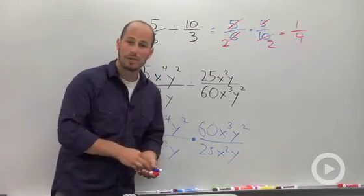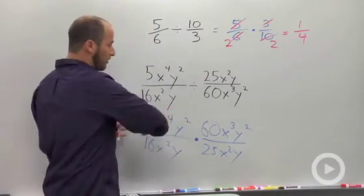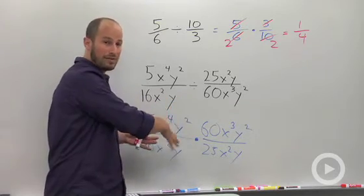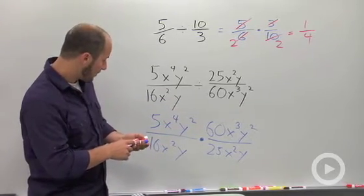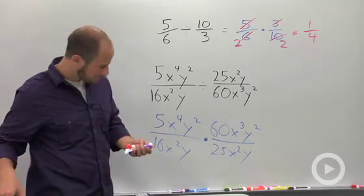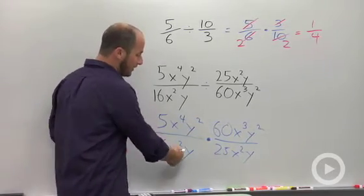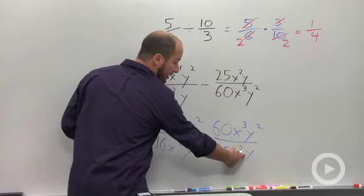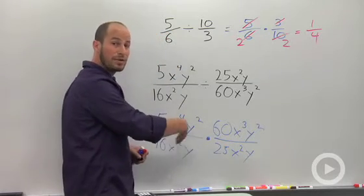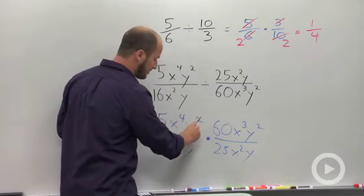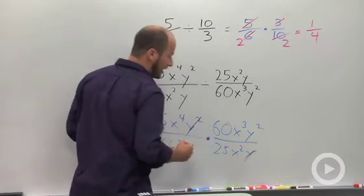So we can either cancel across our fractions or within our fractions. It doesn't really matter. So what I'm going to end up doing is I have a y in the bottom, another y over here, and a y squared up top. So those three things can all cancel to get nothing.